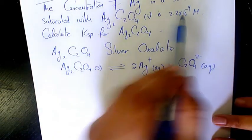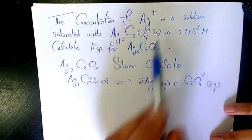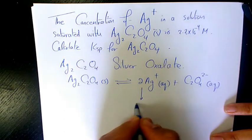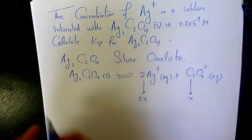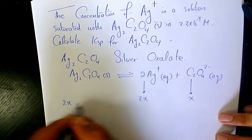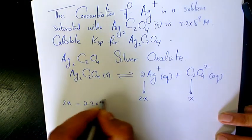That's the concentration of Ag. It means that here that's going to produce 2x, here it's going to produce x. So it means that 2x equals 2.2 times 10 to the power of negative 4 molar.